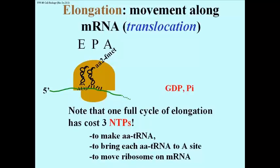And then, as you might imagine, movement — motility, translocation — even though it's a very small movement, the movement of this big ribosome along the messenger RNA also requires the hydrolysis of a nucleotide triphosphate, and as you just saw, that is another GTP. Making a polypeptide is one of the most energy-costly things a cell can do.